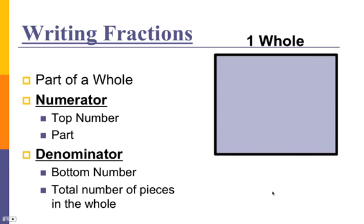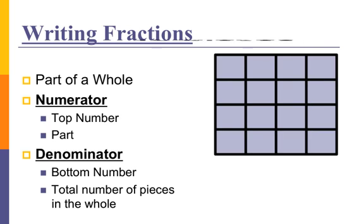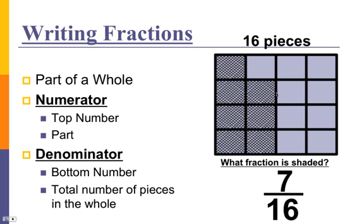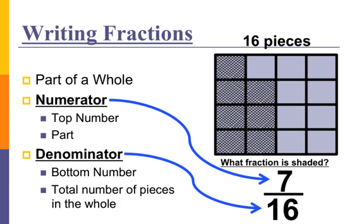Here's another example. This time we have a whole broken up into 16 pieces, and the question is: what fraction is shaded? We've got 16 pieces and we've got one, two, three, four, five, six, seven — seven pieces are shaded. So what fraction would I use? That would be seven sixteenths. Seven is the numerator because it tells me how many boxes are shaded, and 16 is my denominator because it tells me how many total boxes I have in the whole.